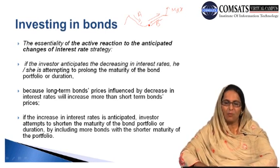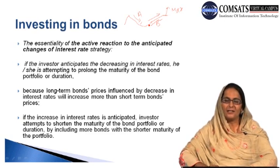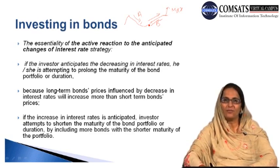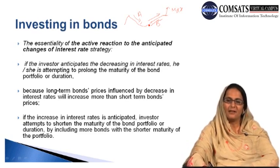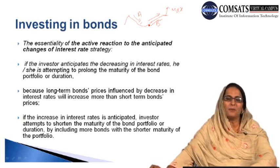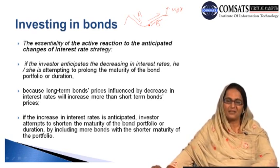Investors can include more bonds with short maturity in their portfolio and shorten the maturity time period of their existing bond portfolio. This is opposite to the decision made when the rate of interest is decreasing — when they saw the rate of interest likely to decrease, they extended the holding period and maturity of their bonds. This active reaction to anticipated changes in the interest rate is an important rational decision.